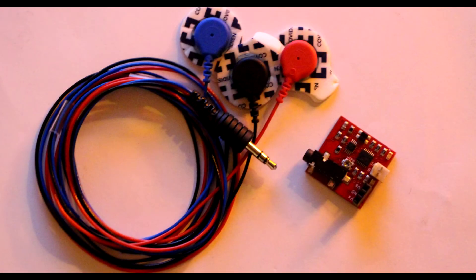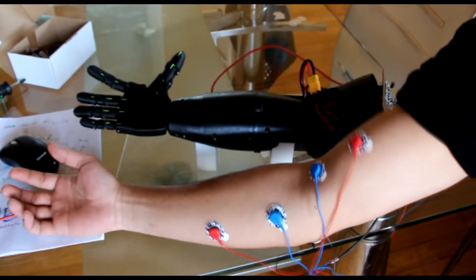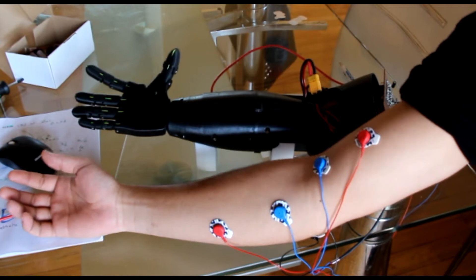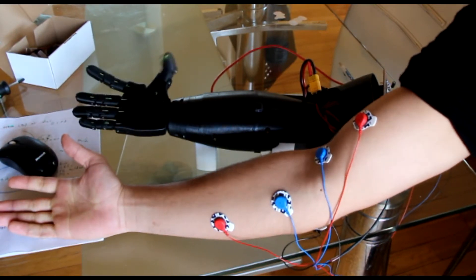I even used EMG sensors to use my muscles to control the movement of the bionic hand. And this is typically how an amputee may control a bionic hand they're fitted with.